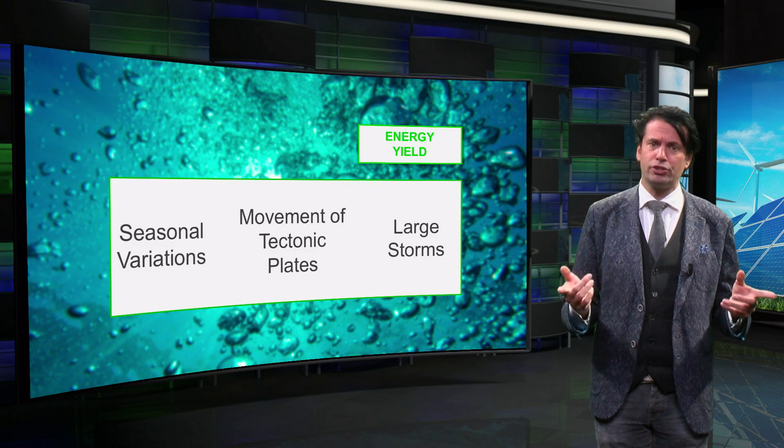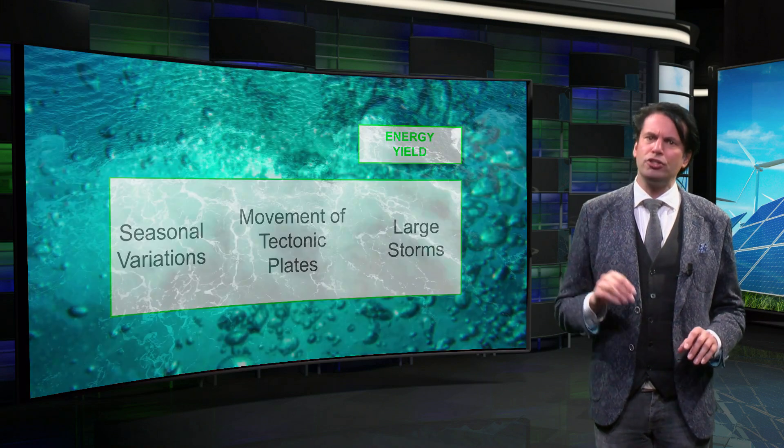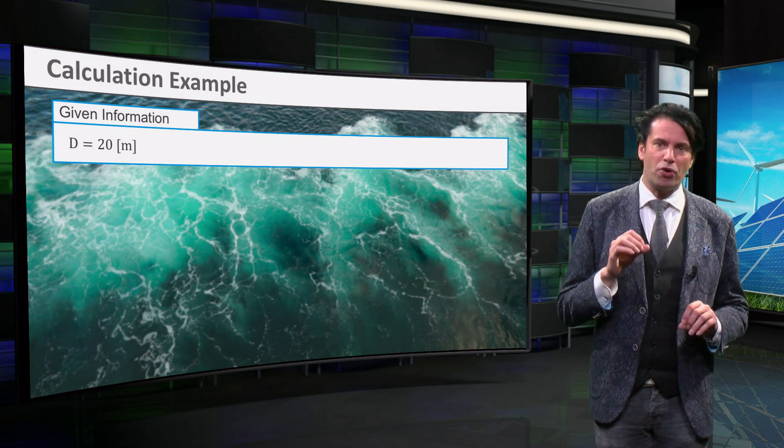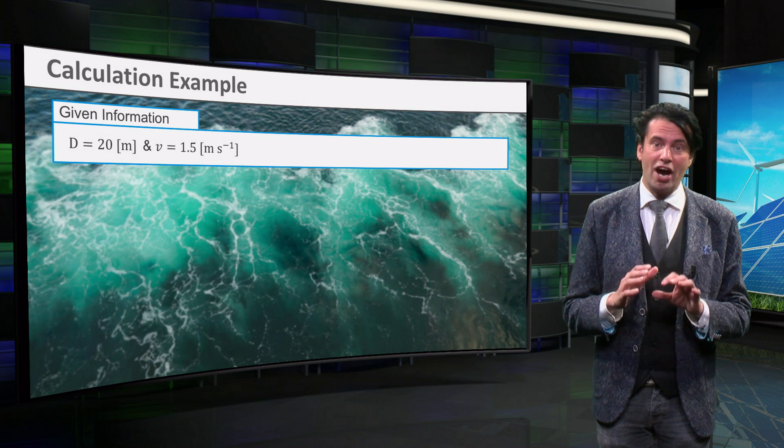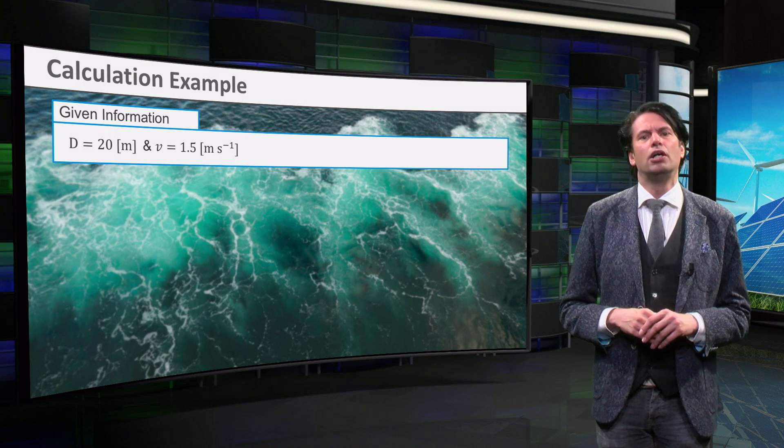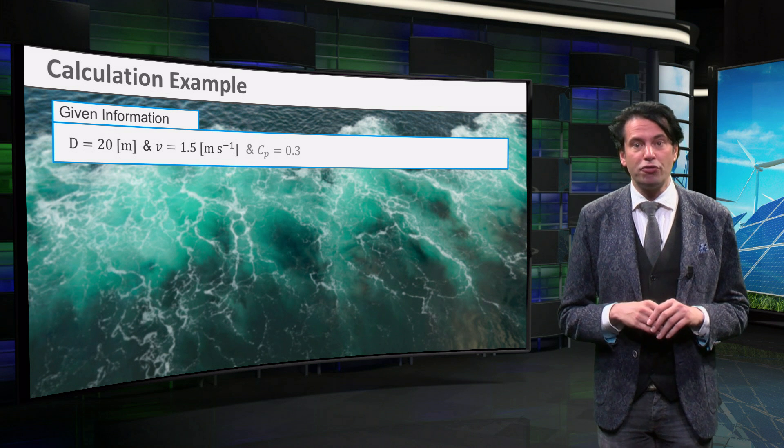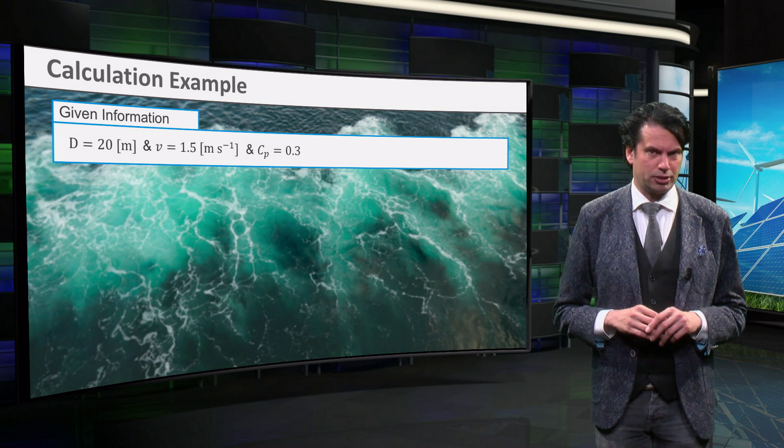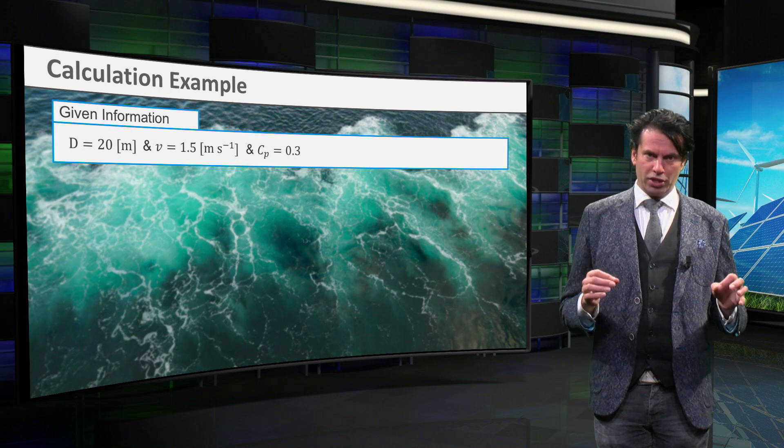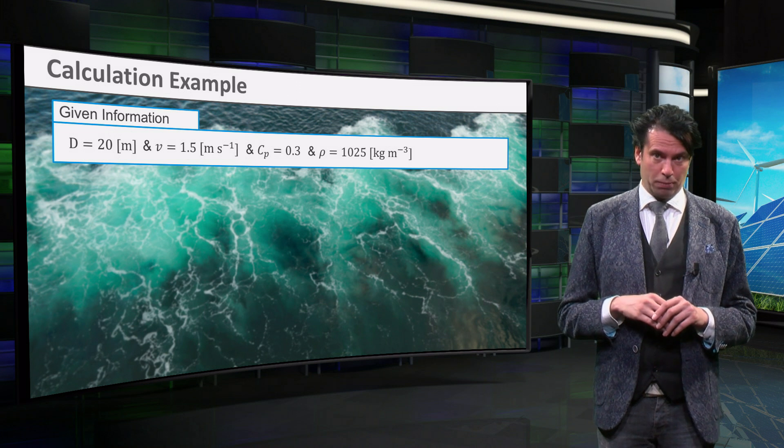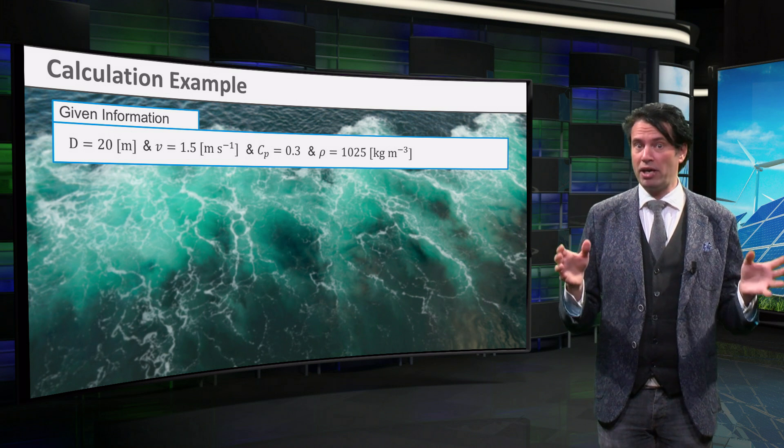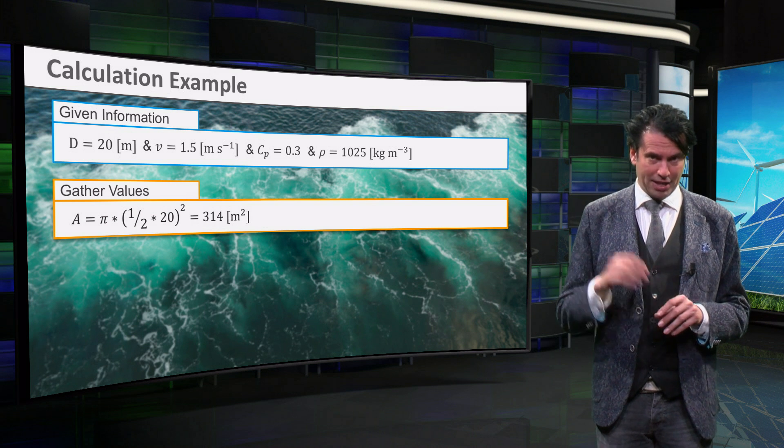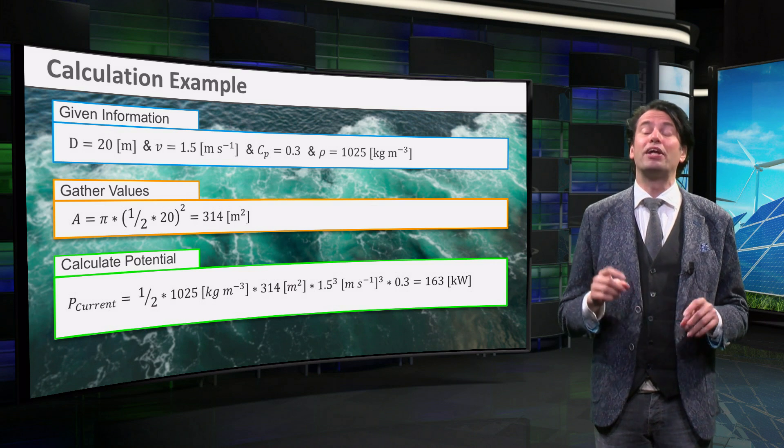Let's do a small design calculation together. We will imagine a turbine with a diameter of 20 meters and an ocean current velocity of 1.5 meters per second, which is below average for the Gulf Stream. We will use a power coefficient of 0.3, which is quite a conservative estimation compared to wind turbines. The ocean water density is 1025 kg per cubic meter. The turbine diameter gives us a rotor surface area of over 300 square meters, and this results in an output power of 163 kW.